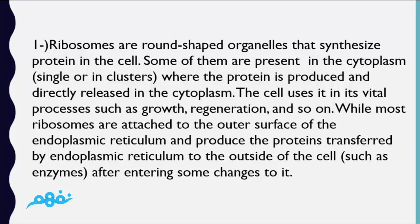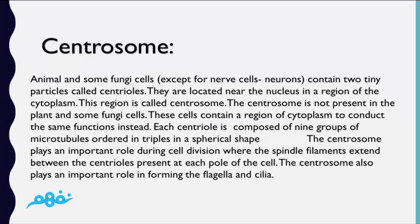Now we will talk about the centrosome. Animal cells and some fungi cells — except for nerve cells or neurons — contain two tiny particles called centrioles, located near the nucleus in a region of the cytoplasm called the centrosome. The centrosome is not present in plant cells and some fungi cells. Each centriole is composed of nine groups of microtubules arranged as triplets in a cylindrical shape. The centrosome plays an important role during cell division, where spindle filaments extend between the centrioles present at each pole of the cell.